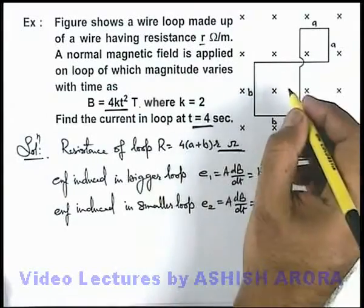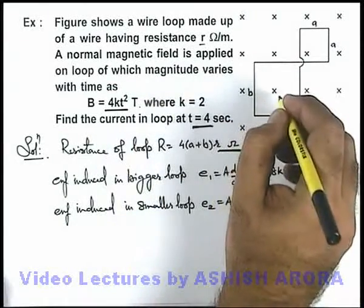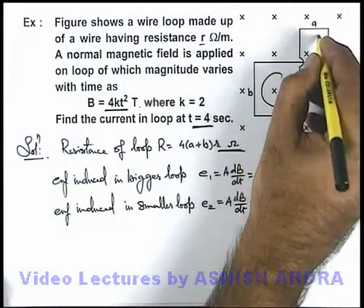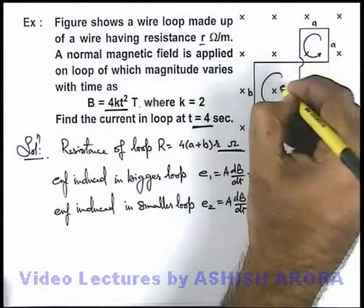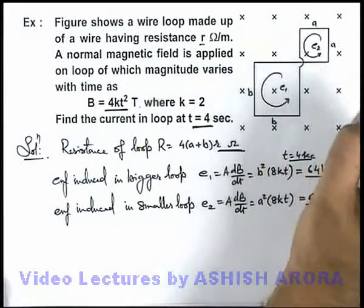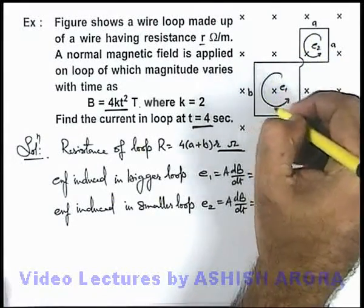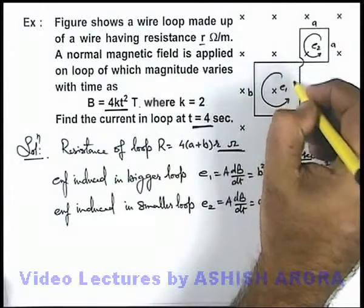Here we have seen that as magnetic induction is increasing in inward direction, the EMF induced will be anticlockwise here and here also. This will be e₁, this will be e₂. And you can see the current induced due to this EMF and current induced due to this EMF both will oppose each other.